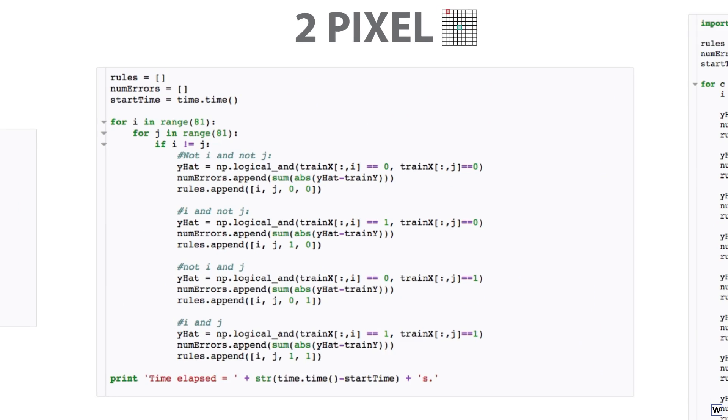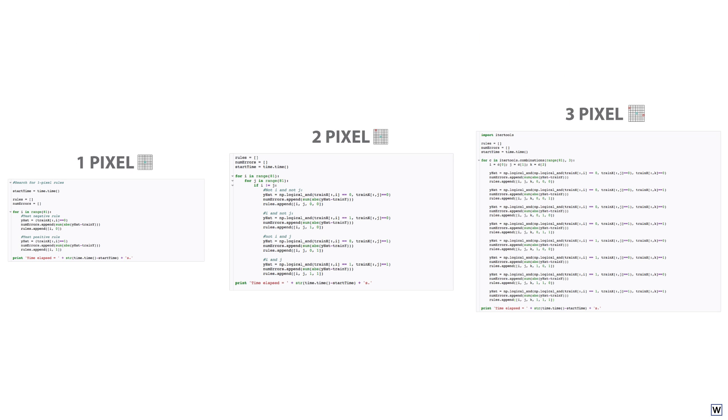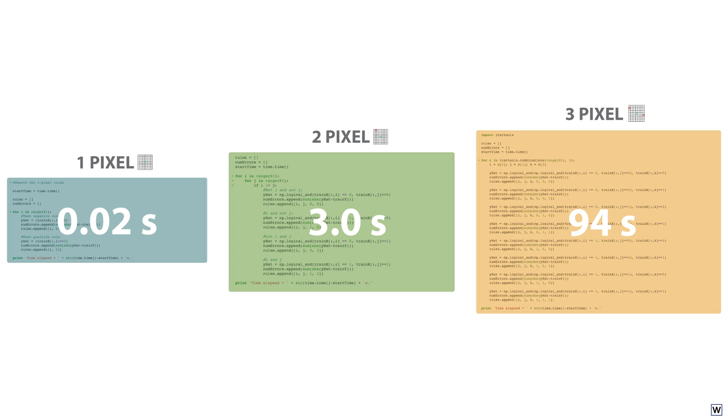Remember that in our 1, 2, and 3 pixel cases, we didn't run into any speed issues. If we go back and time these loops, we see that they took 0.02 seconds, 3 seconds, and 94 seconds respectively to run.